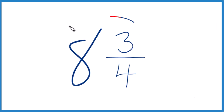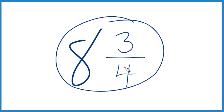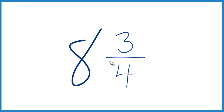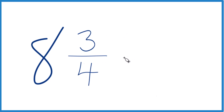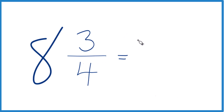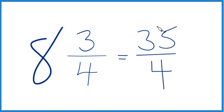Let's write the mixed number 8 and 3 fourths as an improper fraction. Here's how you do it. You take 8, the whole number — 8 times 4 is 32, 32 plus 3 is 35, and then you just bring the denominator across. 35 fourths — that's the improper fraction for the mixed number 8 and 3 fourths.